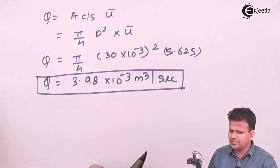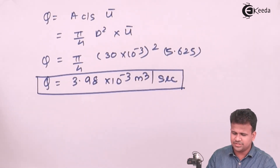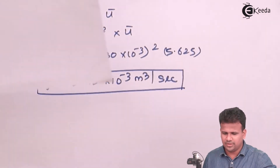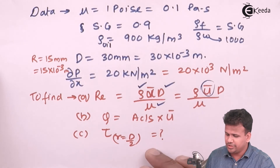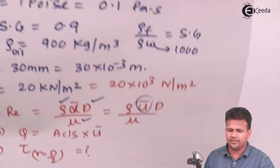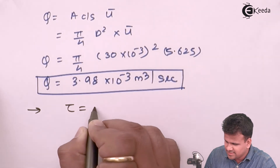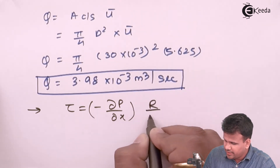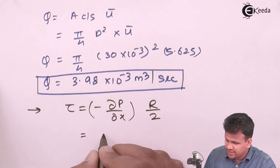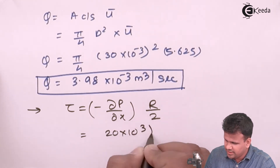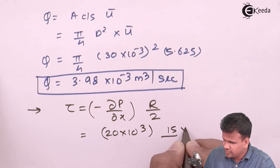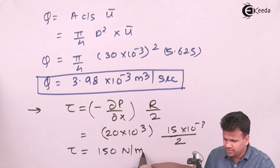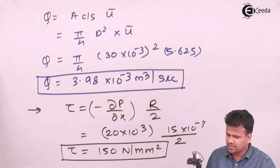Next, we calculate shear stress τ at r = D/2. The formula for shear stress is τ = −(∂P/∂x) × (r/2). Substituting ∂P/∂x = 20×10³ N/m² and r = R = 15×10⁻³ m, the shear stress comes out to be 150 N/m² at r = R (the pipe wall).